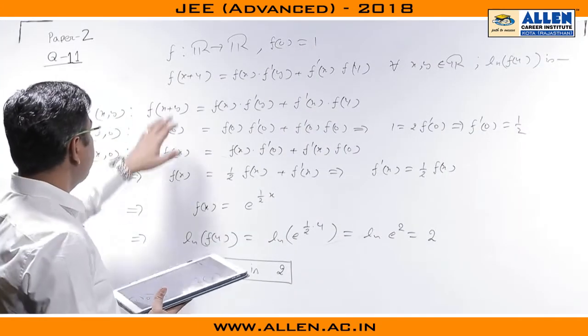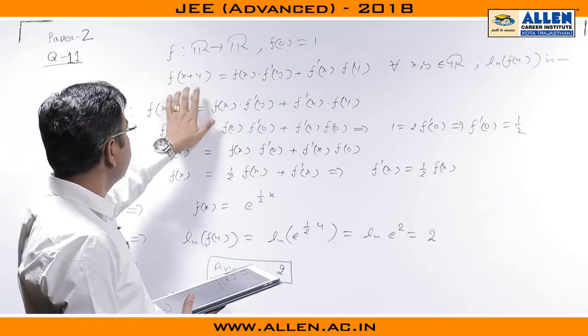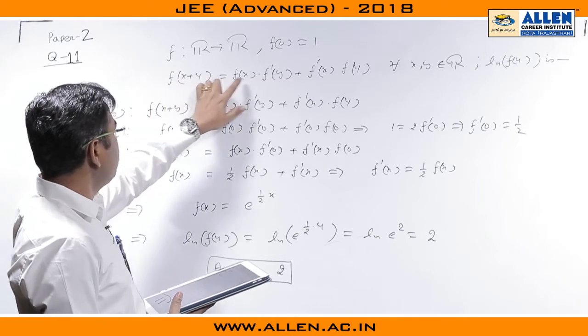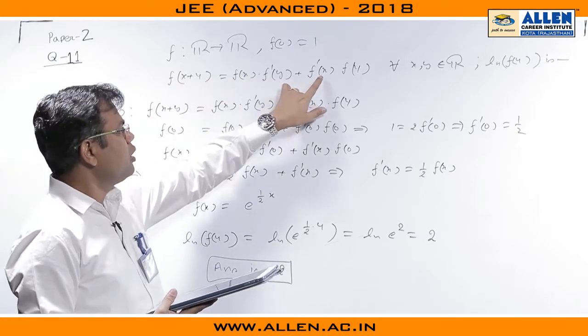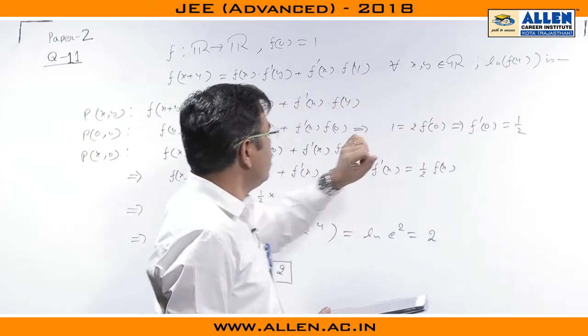In problem 11, we are provided with the information f: R to R with f(0) = 1. f is a differentiable function with an accompanying functional equation f(x + y) = f(x)f'(y) + f'(x)f(y). In the problem we need to calculate ln(f(4)).